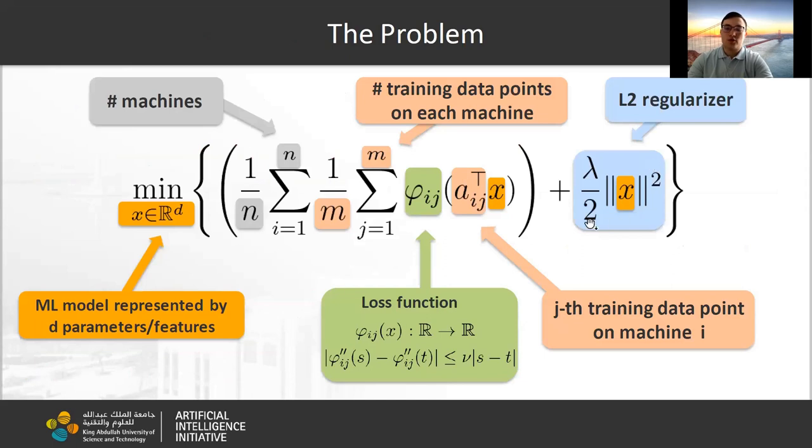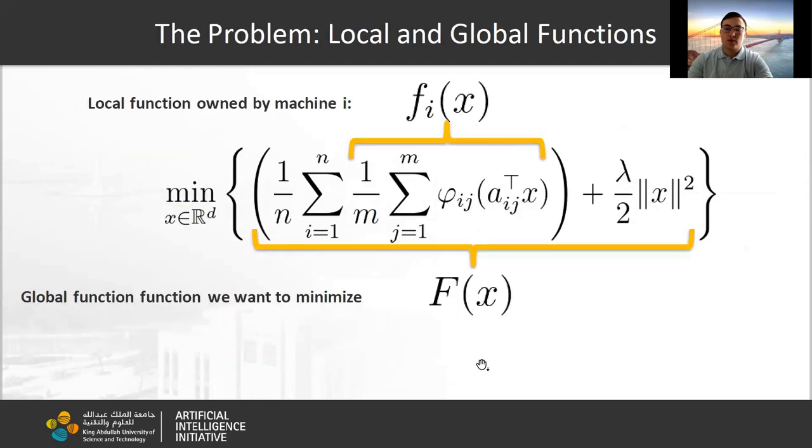We consider an L2-regularized problem, which has the form as on the slide. Here, each function is a generalized linear model with nu Lipschitz second derivative. For simplicity, we use the following notation: the local function is fi, and the whole function is capital F.